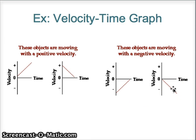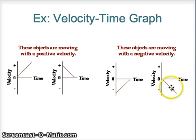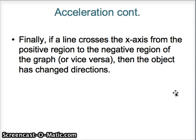Then you have the fourth graph. At the start, you have zero meters per second, meaning it's not moving, but it begins to move towards the left because its acceleration is also negative. Negative direction and negative acceleration means the car is moving faster and faster in a negative direction. Now, what happens when a line on a velocity-time graph crosses the x-axis from a positive region to a negative region? That basically tells you that the object has changed directions.